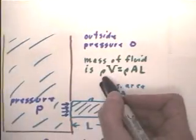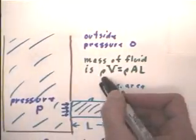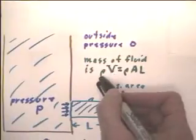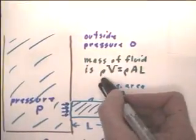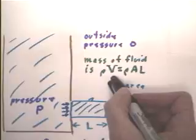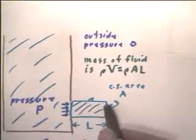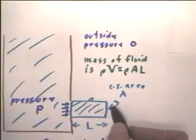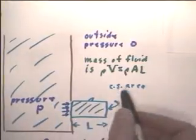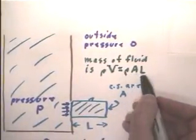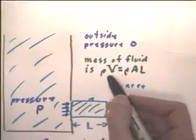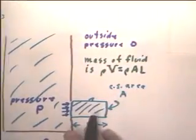Okay. So rho times V is going to be the mass. Density, kilograms per cubic meter times volume in cubic meters. And the volume is just what? This is a cylindrical plug, cross-sectional area A, length L. So its volume is area times length. So the mass of the fluid is rho V, which is rho times A times L.